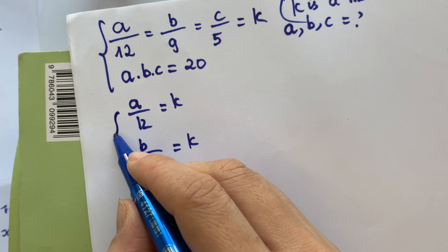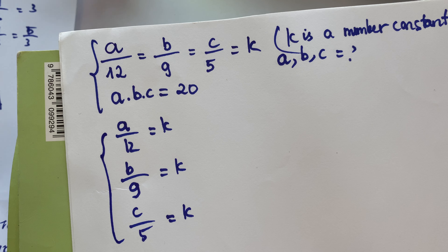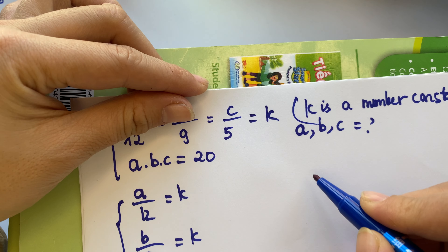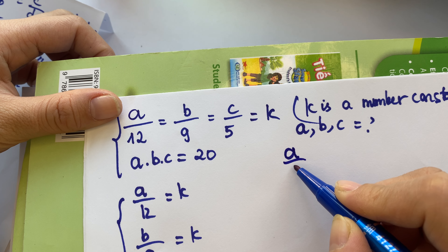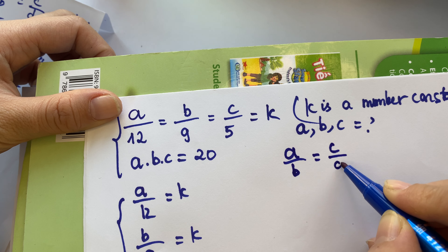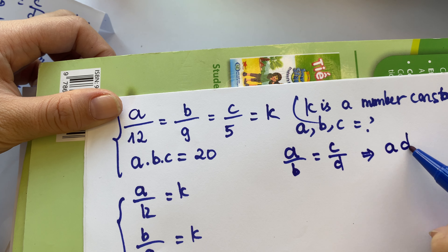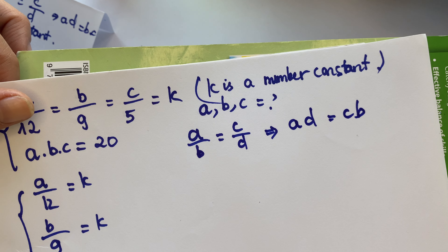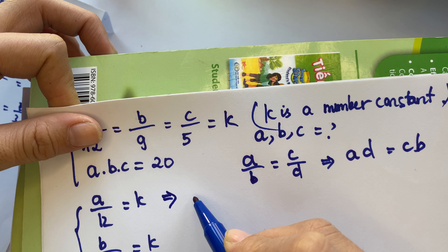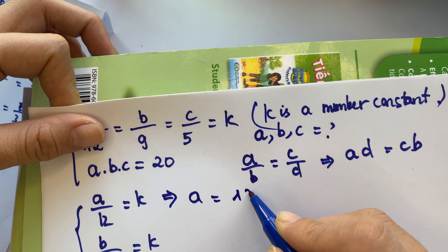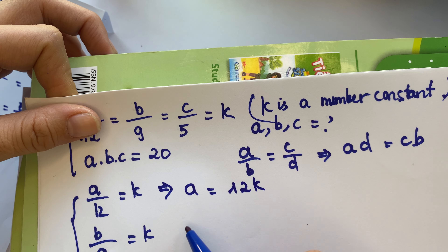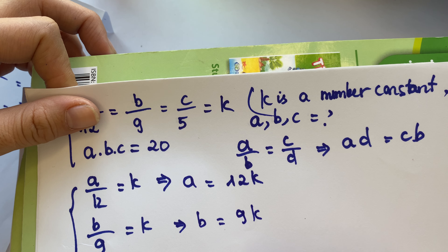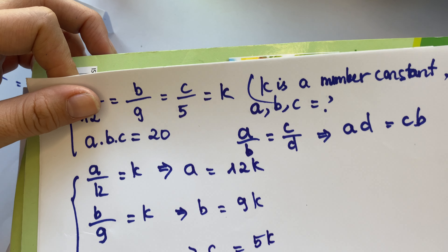Now with the application of properties of equal ratios, we have a equals 12 times k, b equals 9 times k, and c equals 5 times k.